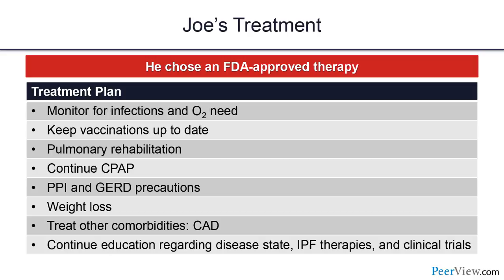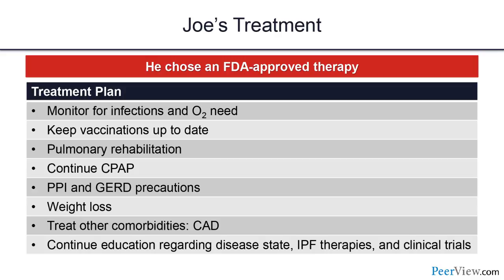We keep vaccinations up to date, plan pulmonary rehab, continue CPAP therapy and reflux precautions with PPI, work on weight management with a mildly elevated BMI of 29, and treat other comorbidities contributing to shortness of breath. At each visit we continue disease state education, updates on therapies, and discuss clinical trials. I strongly encourage referring patients to IPF centers of excellence through the Pulmonary Fibrosis Foundation — both for clinical trial evaluation and lung transplant candidacy.